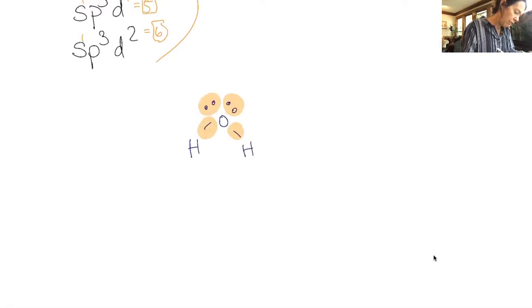Let's count our domains. One, two, three, four. There are four domains. Therefore, this is SP three hybridized. Simple as that.